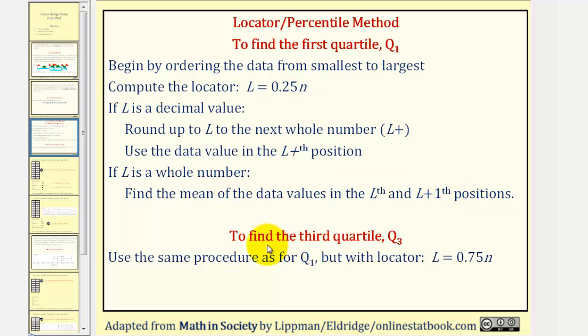We use a similar method to find Q3, except we use L equals 0.75 times N, instead of 0.25 times N.